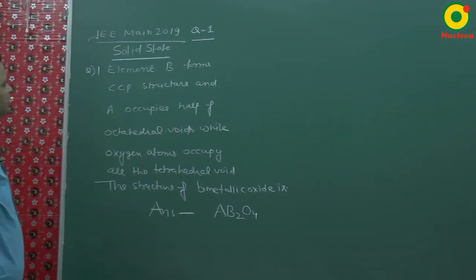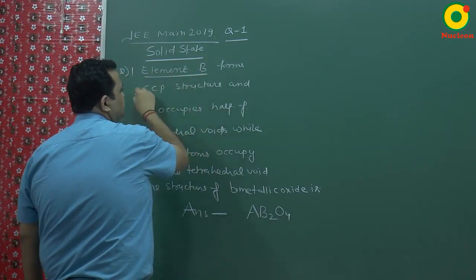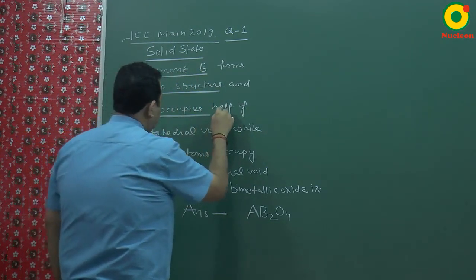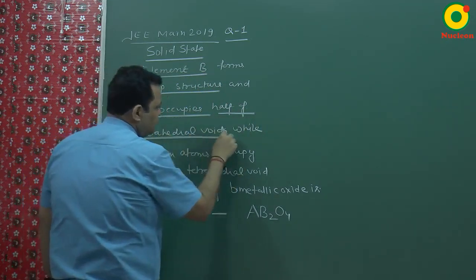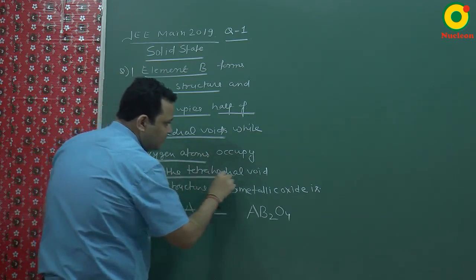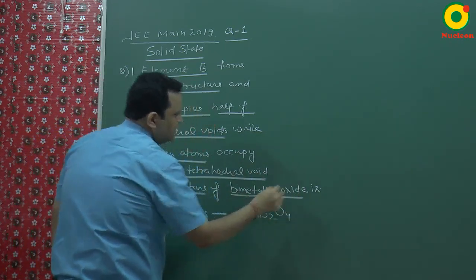So, the next question is about the solid state. Element B forms CCP structure and A occupies half of the octahedral voids while oxygen atoms occupy all the tetrahedral voids. What is the structure of bimetallic oxide?